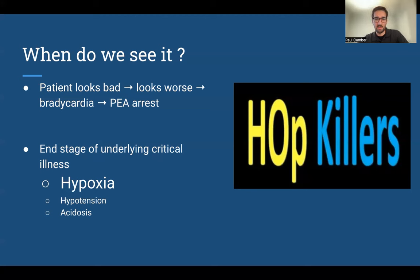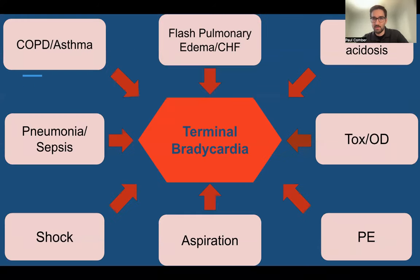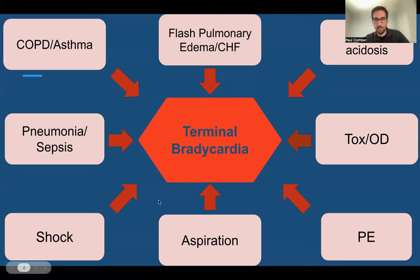HOP KILLERS can be applied to terminal bradycardia in a sense. We mostly see terminal or peri-code bradycardia in our end-stage respiratory or hypoxic patients, but we can also see it in patients who are profoundly hypotensive or acidotic. Classically we'll see it in our COPD, flash pulmonary edema, aspiration, or septic patients. But you can really see it in any disease process — massive PE, severe acidosis, DKA, tox patients, patients in shock. Lots of different things come to this single final pathway.